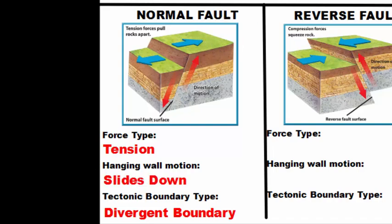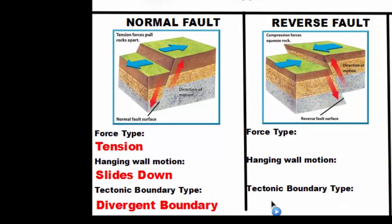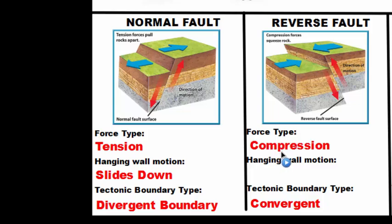The reverse fault is exactly what it sounds like — the reverse of a normal fault. The opposite of a divergent boundary is a convergent boundary, where plates collide. The force type is compression rather than tension. Remember compression by the word 'press' — two things come together to press. As a result, the hanging wall moves up the fault; compression forces the hanging wall to slide up.